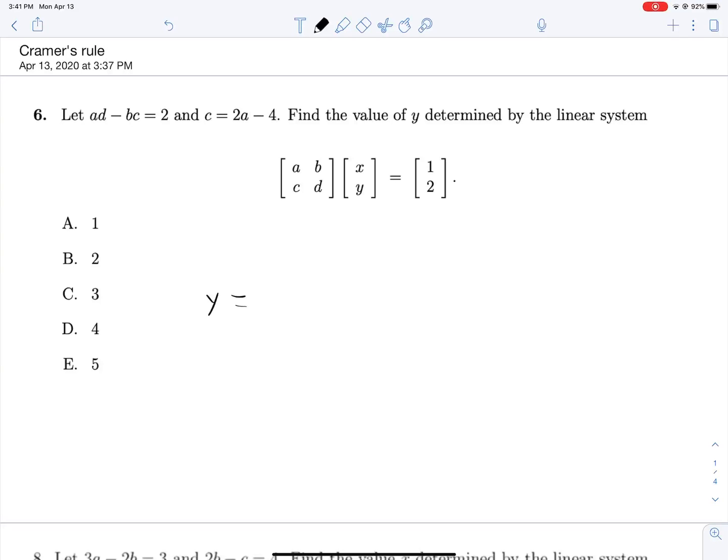We know that by Cramer's rule we can set the value of Y equal to the determinant of this matrix but with the Y column, the second column in this case—that'll be all the values that are multiplied by Y if we multiply this out—replaced by the vector that everything is equal to. So that will give us AC, 1, 2 and then we're dividing by the determinant of this matrix with nothing done to it. So ACBD.